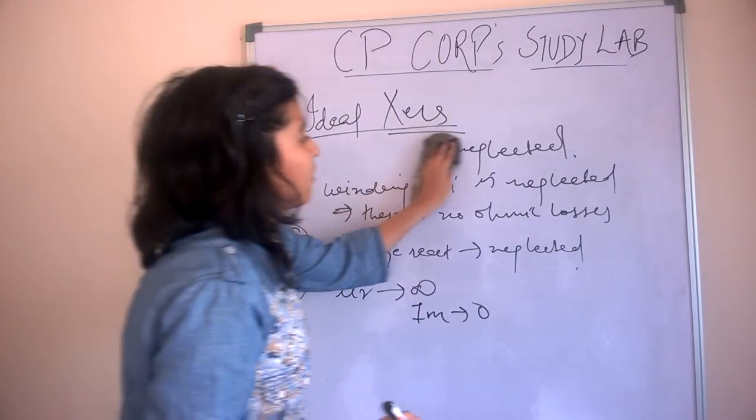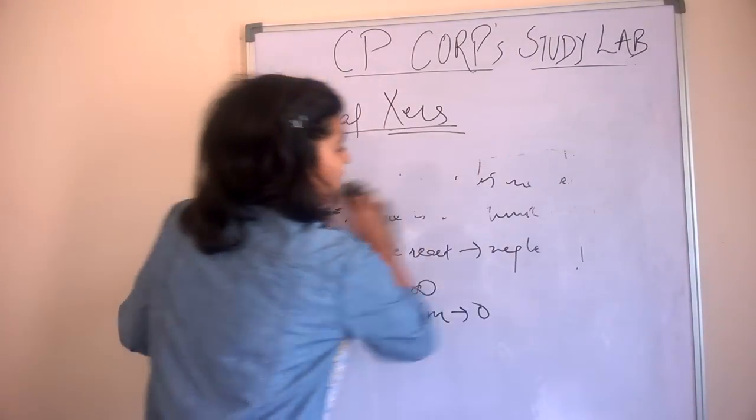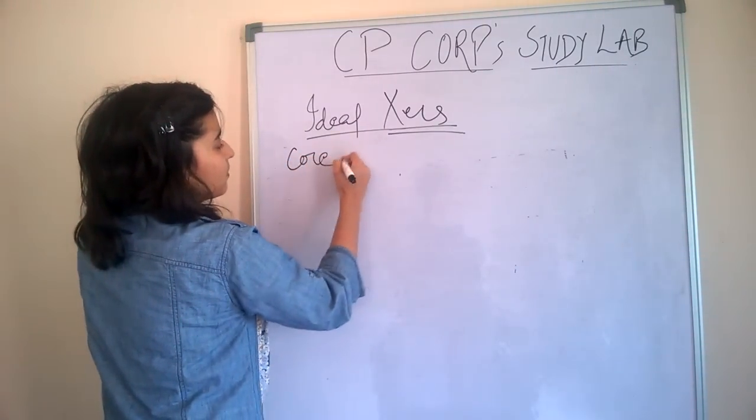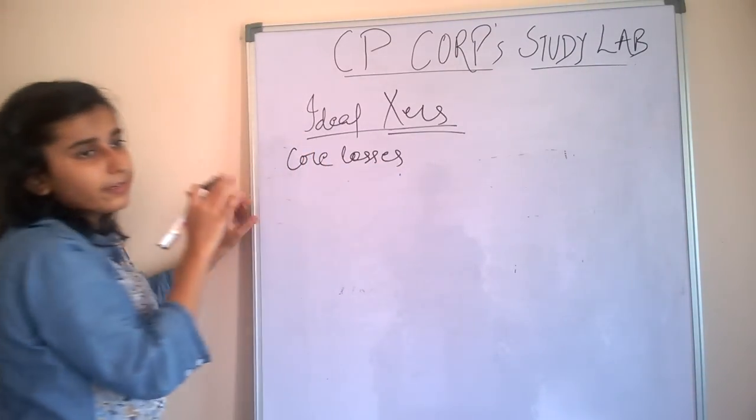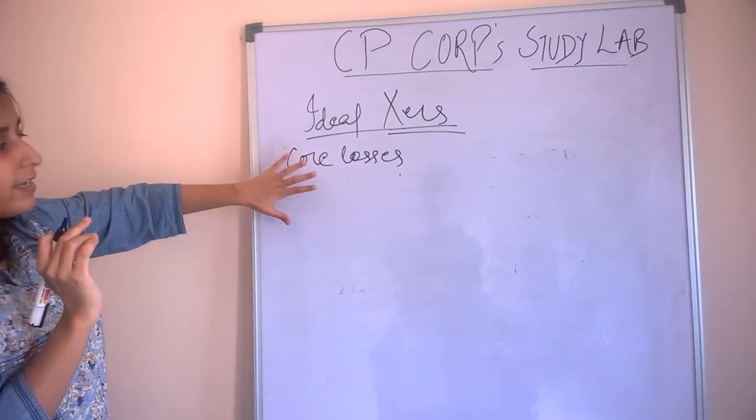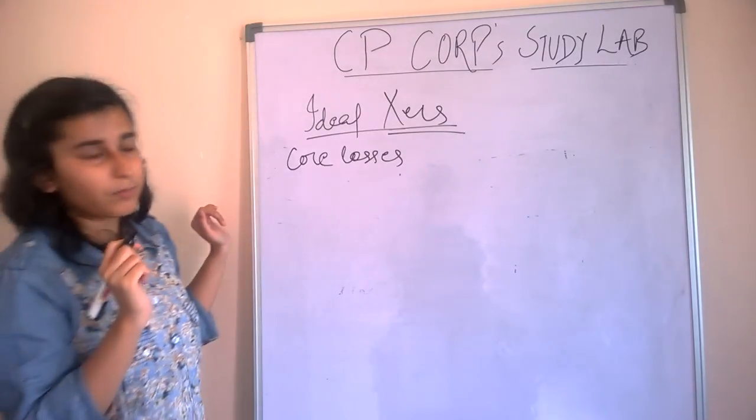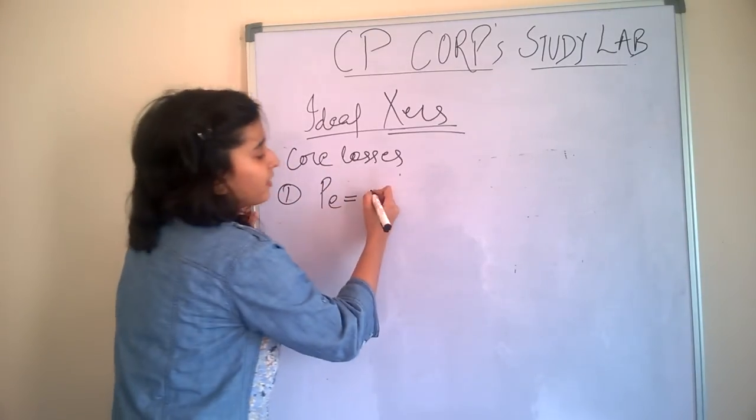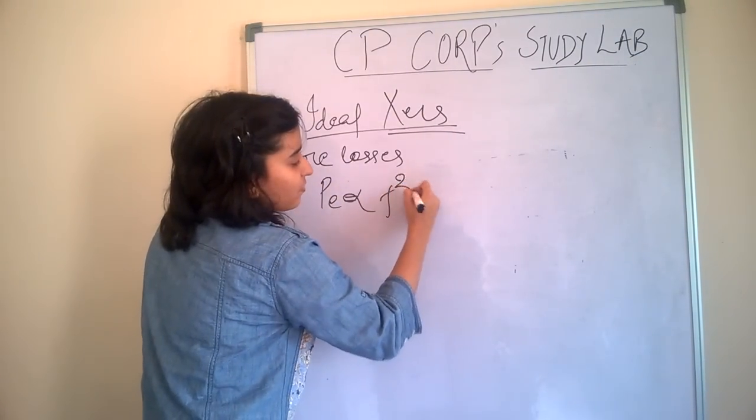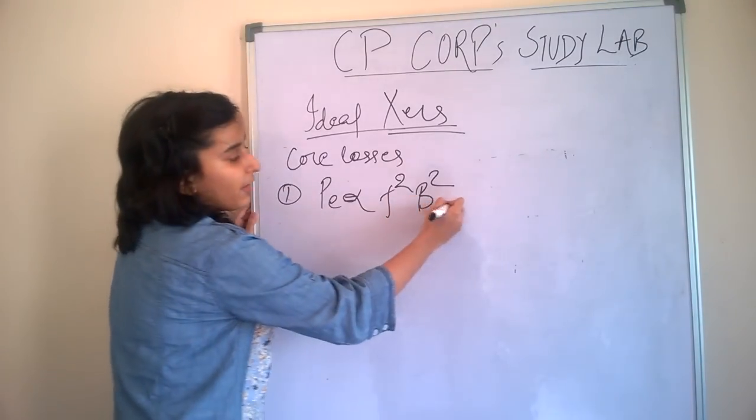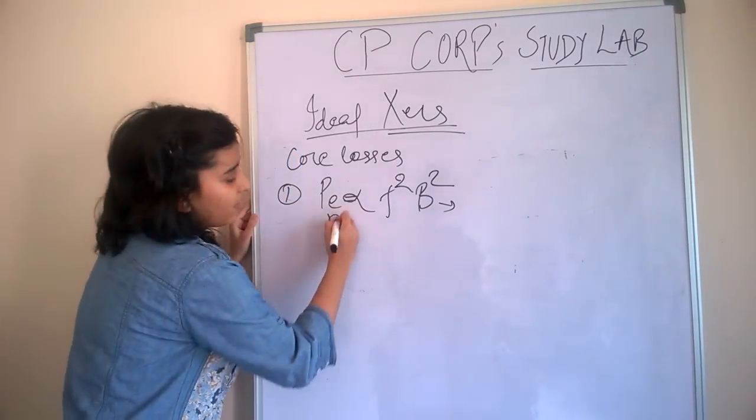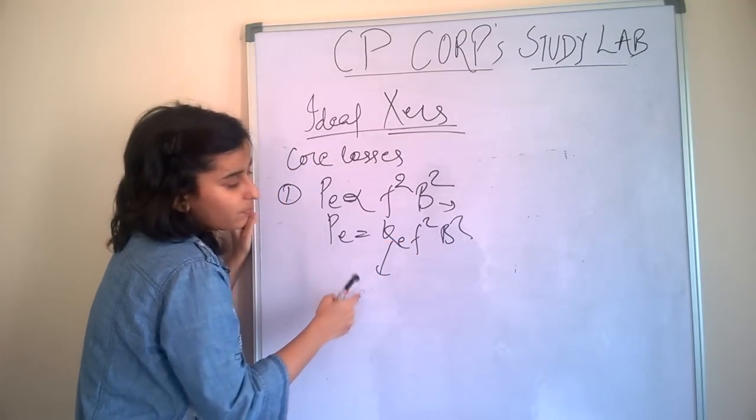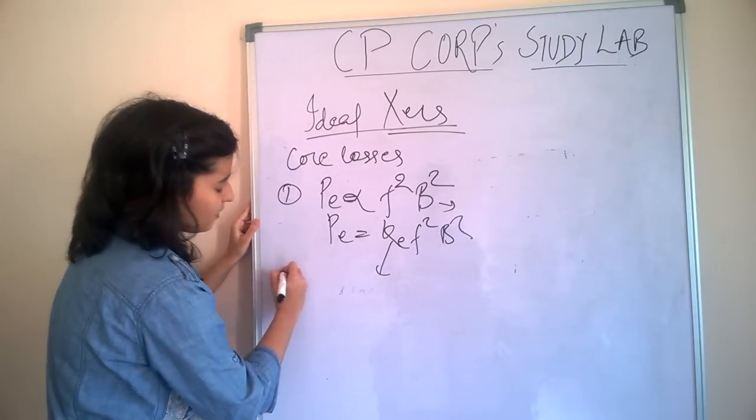Now the very important topic for GATE purpose is core losses. Core losses are neglected in ideal transformer, but it has sufficient value in practical transformers. First, eddy current loss, denoted by Pe, and it is proportional to f² and d². D is magnetic field density, and Pe = kef²d², where k is a constant that depends on core and volume of the core.